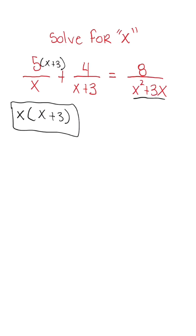4 is just missing the x, and then our 8 is not missing anything. Once we have a common denominator, we could drop the denominator and just use the numerator to solve. So we'll have 5x plus 15 plus 4x is equal to 8.